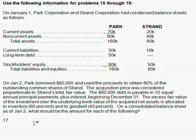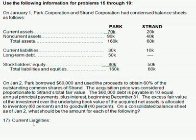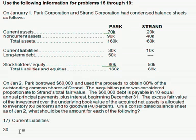Problem number 17 asks us for current liabilities. We can find this by taking 30k plus 10k. Pretty easy. But what do you need to account for in addition to what's blatantly obvious?